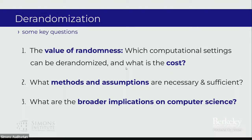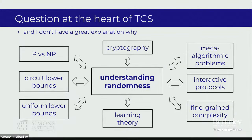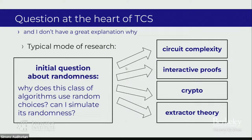The third question is: what are the broader implications of derandomization for computer science? This is how I look at the world when I wake up in the morning. Derandomization is really at the heart of computer science — it's inherently related to any other area: P versus NP, lower bounds for circuits, lower bounds for Turing machines, crypto, interactive proofs, meta complexity, learning theory, fine-grained complexity, anything. The usual mode of research is to start from a question about randomness, try to grab the random coins and take them away, and branch out to circuit complexity, interactive proofs, crypto structures, across theoretical computer science.